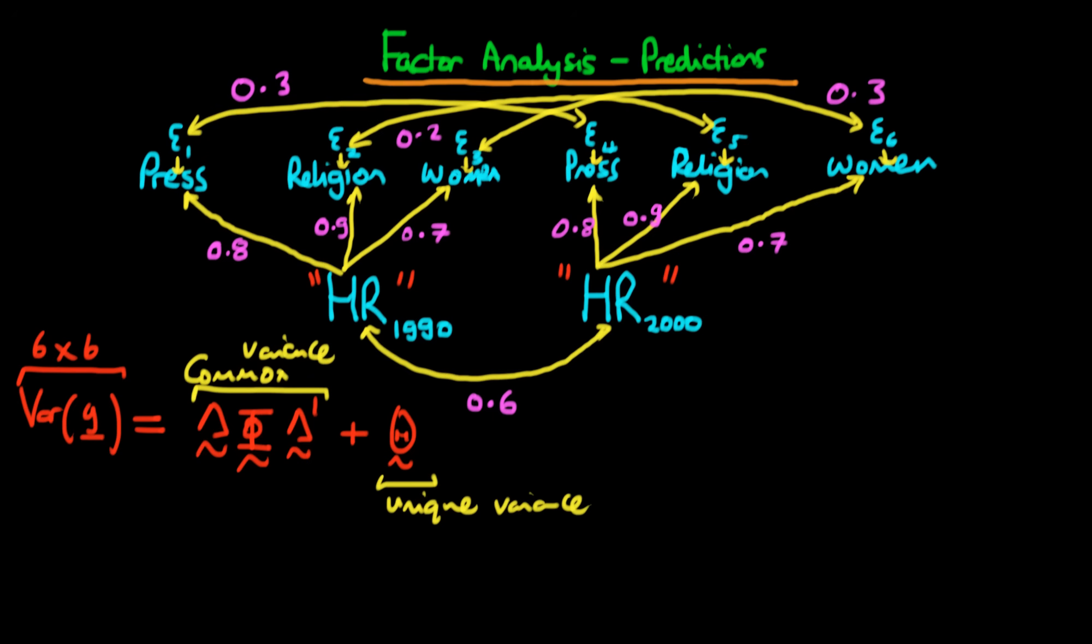So what would this variance-covariance matrix for the errors actually look like here? Well, because we've got 6 errors, it's going to be a 6x6 matrix. So the diagonal components are just going to be the variances of the given errors, which I actually haven't specified up here. But it's not purely going to be a diagonal matrix. There are going to be some off-diagonal components which correspond to the covariance of errors.